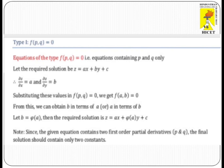Let the required solution of the given partial differential equation be Z = AX + BY + C. Using partial derivatives, dou Z by dou X equals A and dou Z by dou Y equals B. Substituting these values in the given equation, we get F(A,B) = 0.